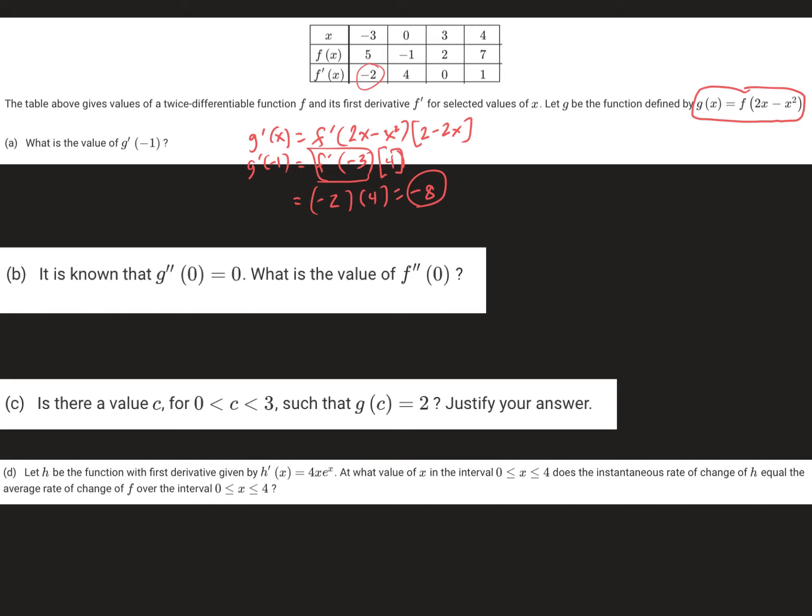Now, part b. It's known that g double prime is equal to 0. What's the value of f double prime? So, don't let that throw you. Just go ahead and find g double prime first. I would need to use the product rule. So g double prime of x would equal f prime of 2x minus x squared times the derivative of 2x minus 2x, which is negative 2,